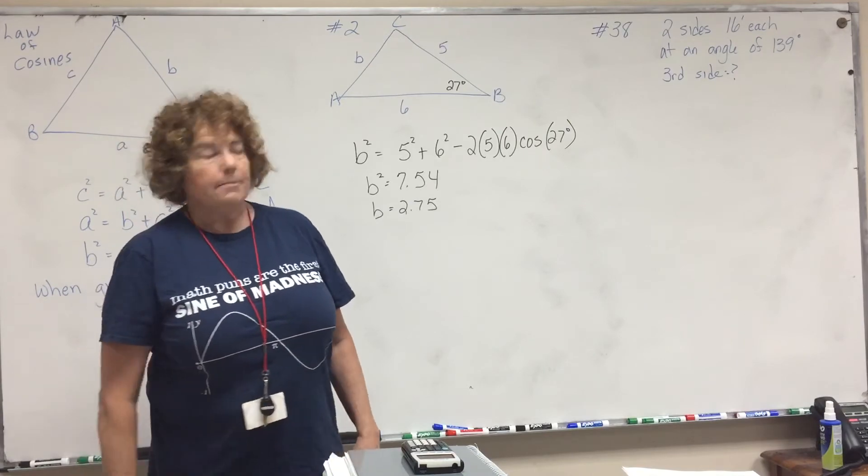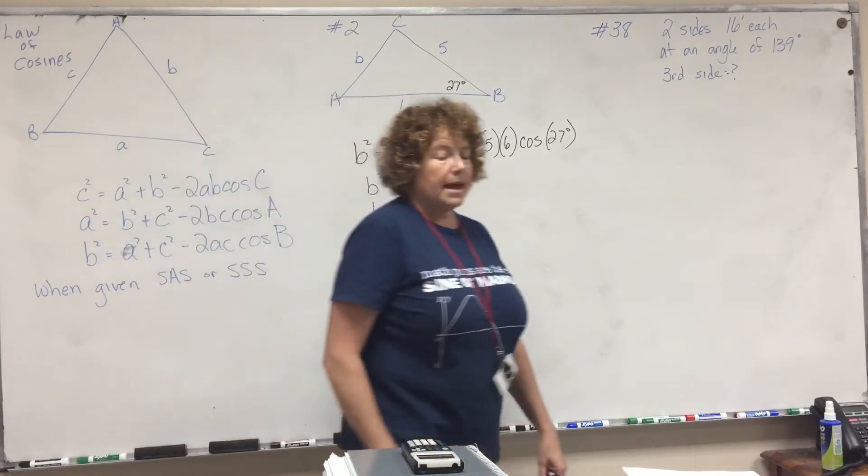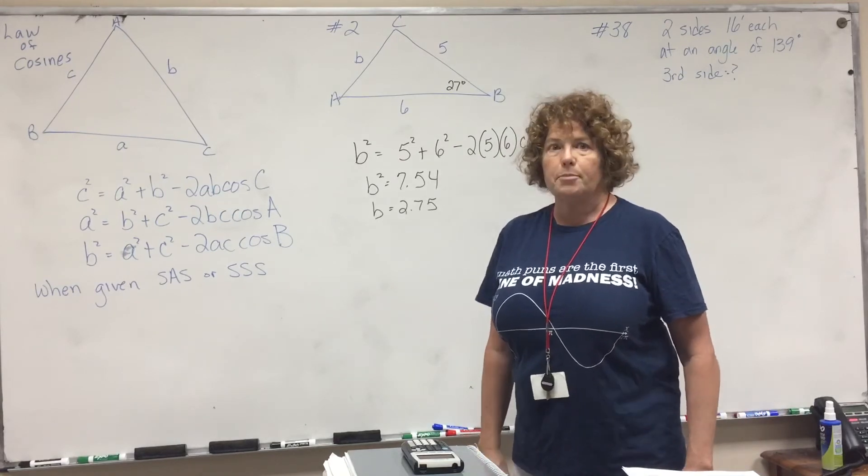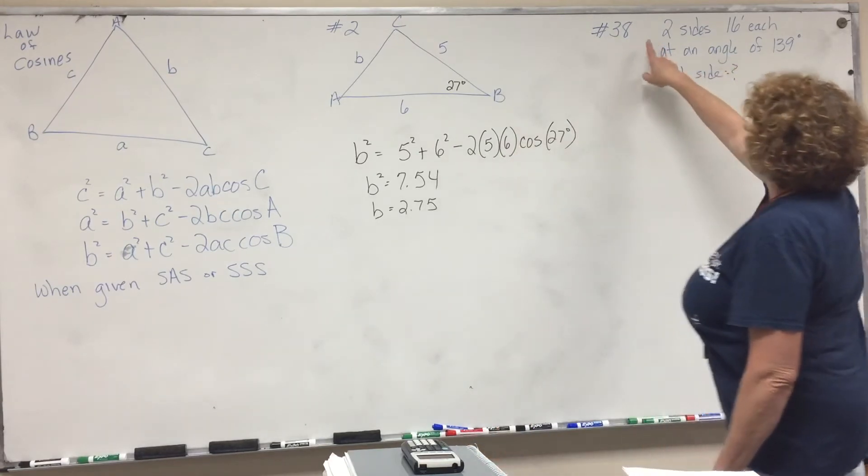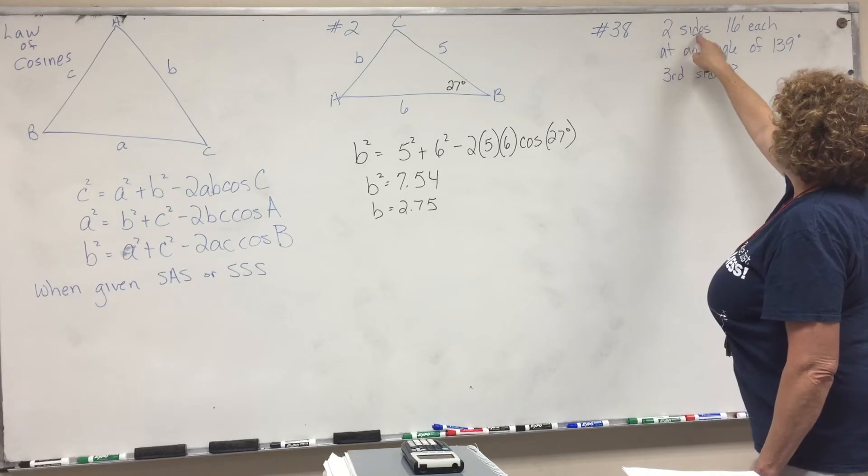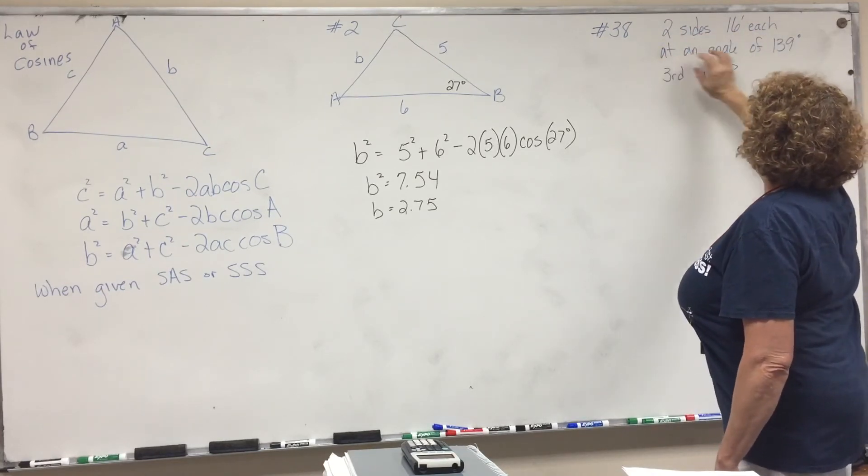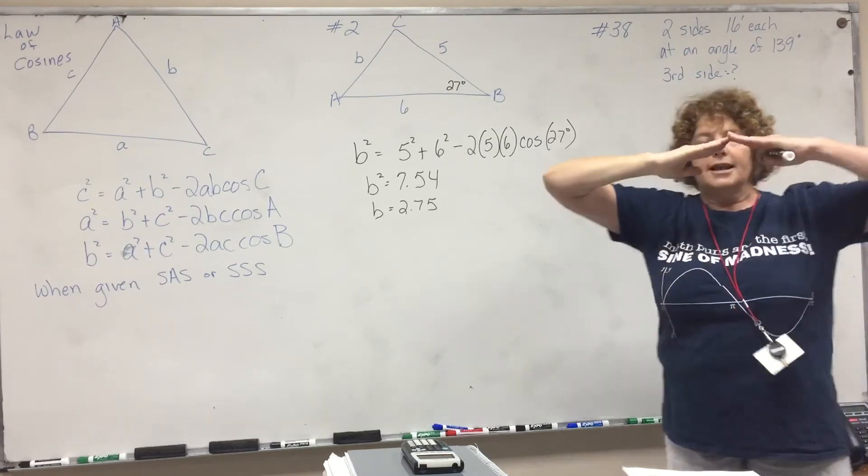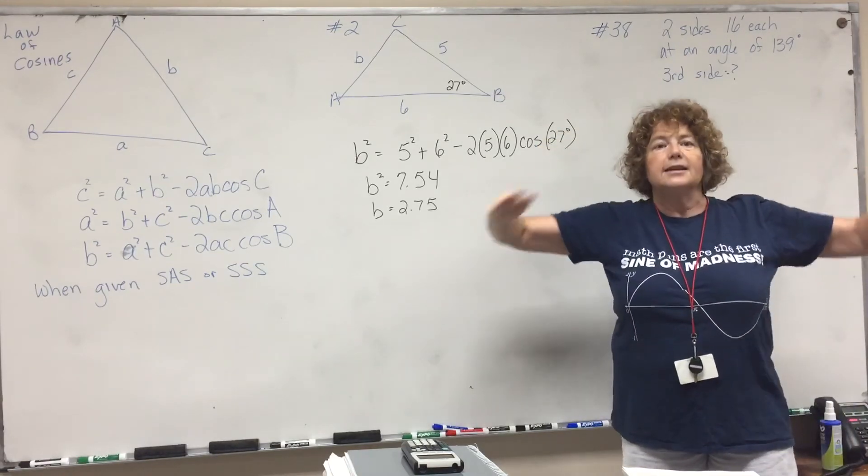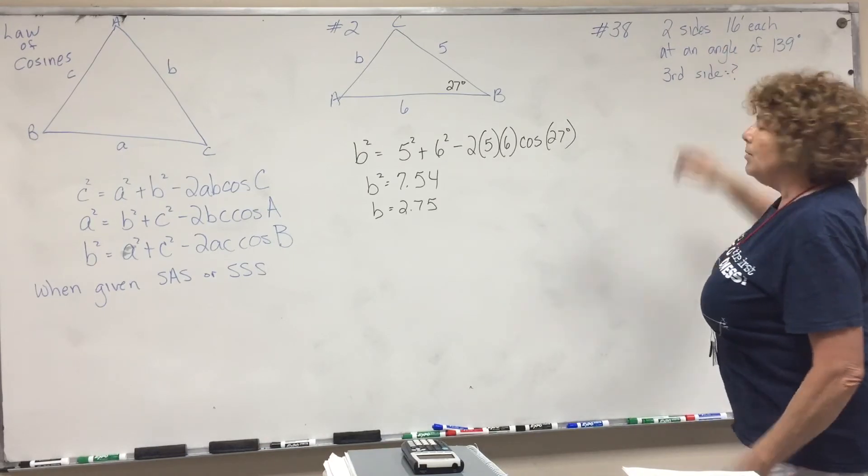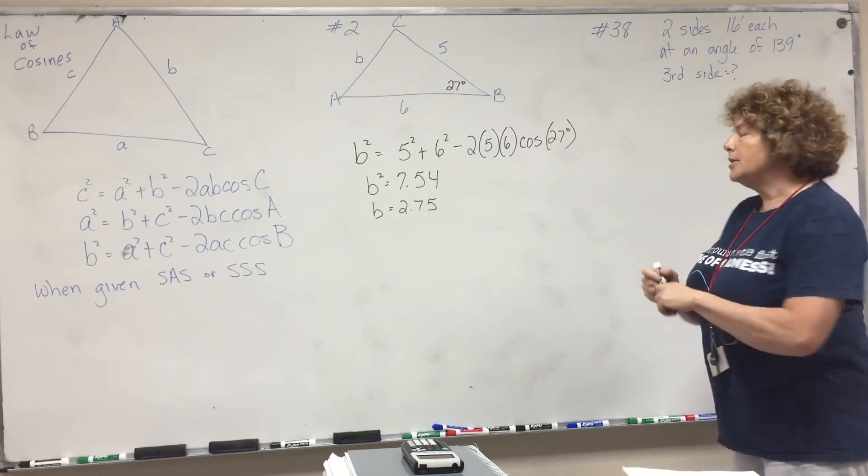Okay? Now, I'm going to do a word problem. And the important thing about word problems with trigonometry is to draw the picture. So if we look at this, we have two sides of a truss that are 16 feet each. And they're put together at an angle, like a truss is one of those things at the top of a roof, an angle of 139. We want to know the third side of that triangle.